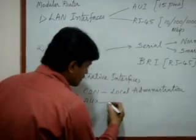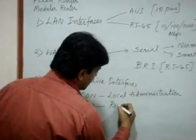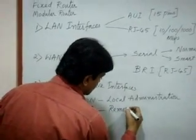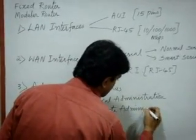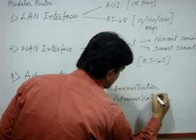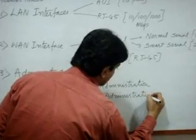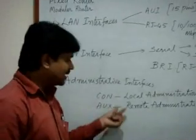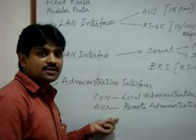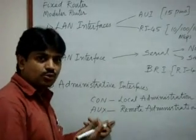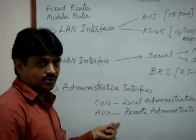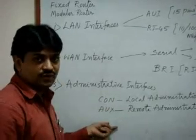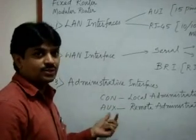The auxiliary port is for remote administration. We can access the router remotely, maintain it, and troubleshoot problems through this port. These are the interfaces available in routers.